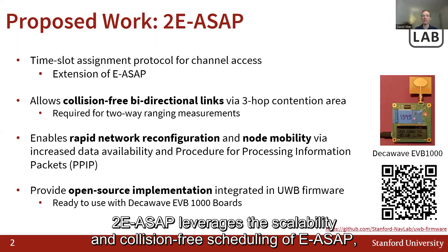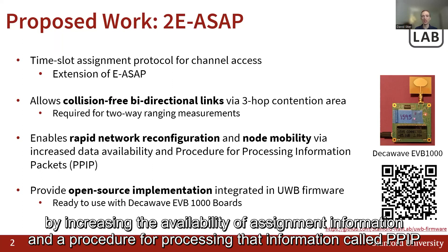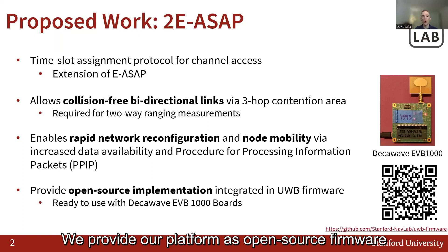2EASAP leverages the scalability and collision-free scheduling of EASAP and extends it to support bi-directional links via 3HOP contention areas, and to enable rapid network reconfiguration and support for node mobility by increasing the availability of assignment information and a procedure for processing that information called PPIP.